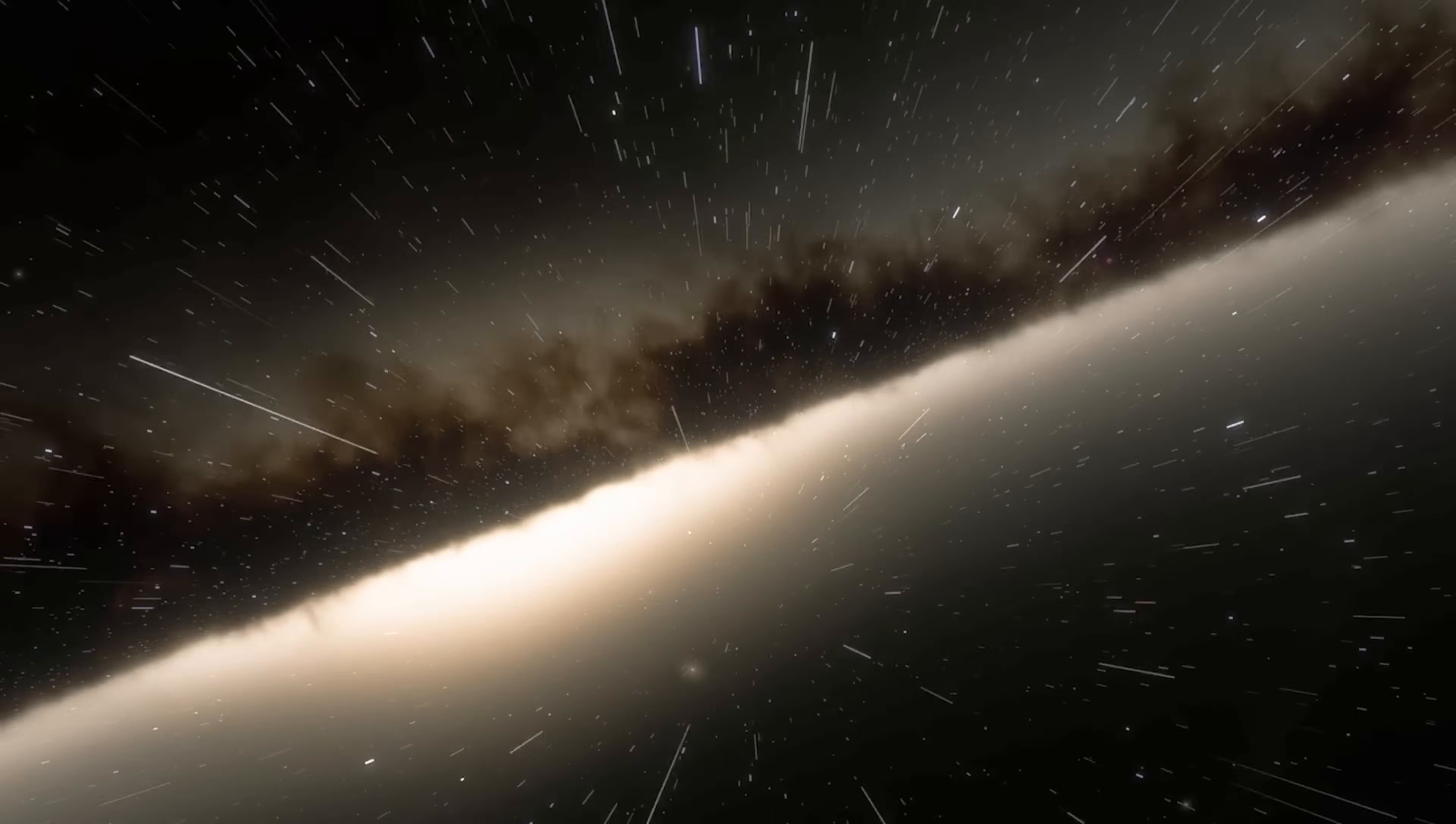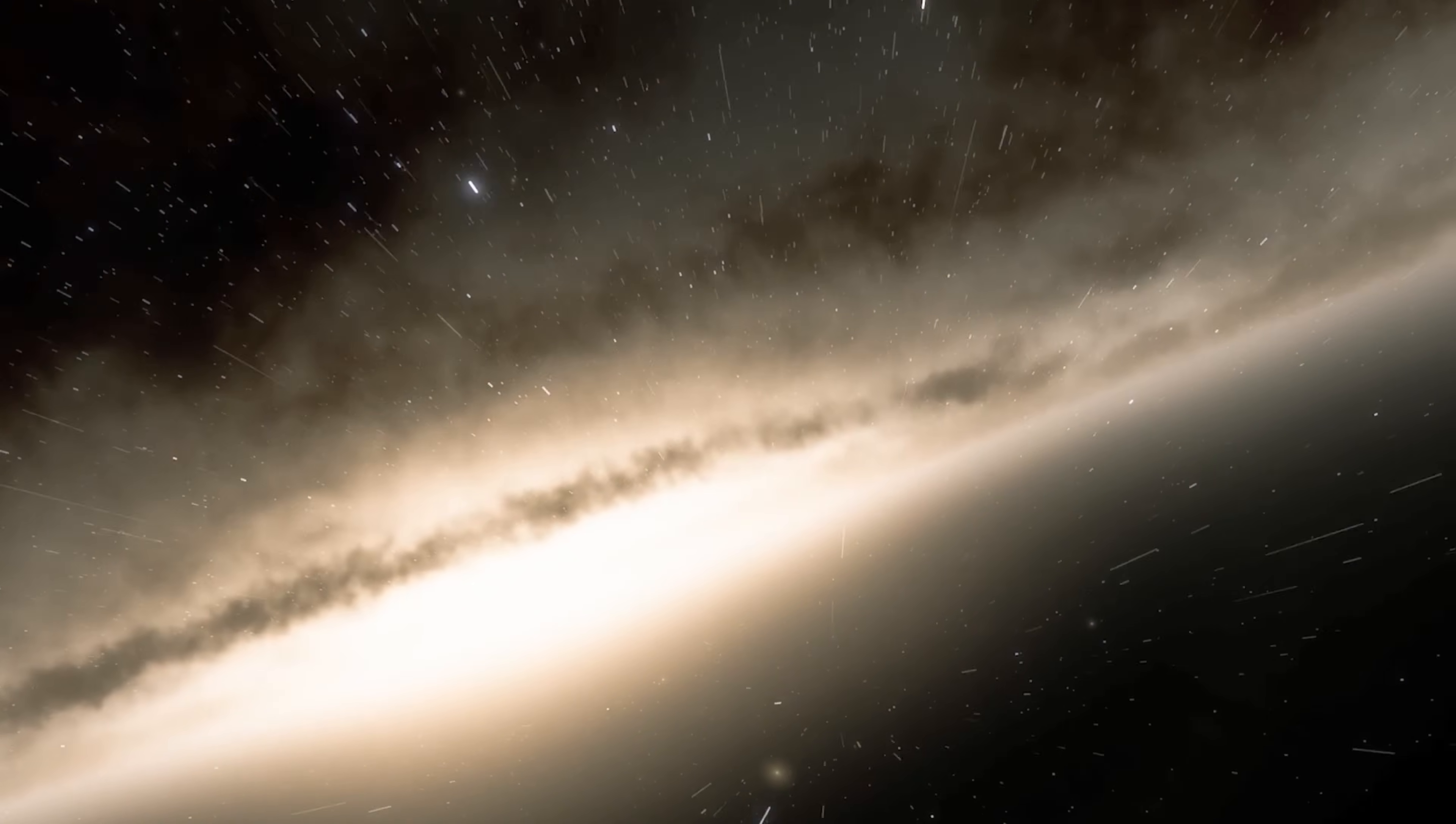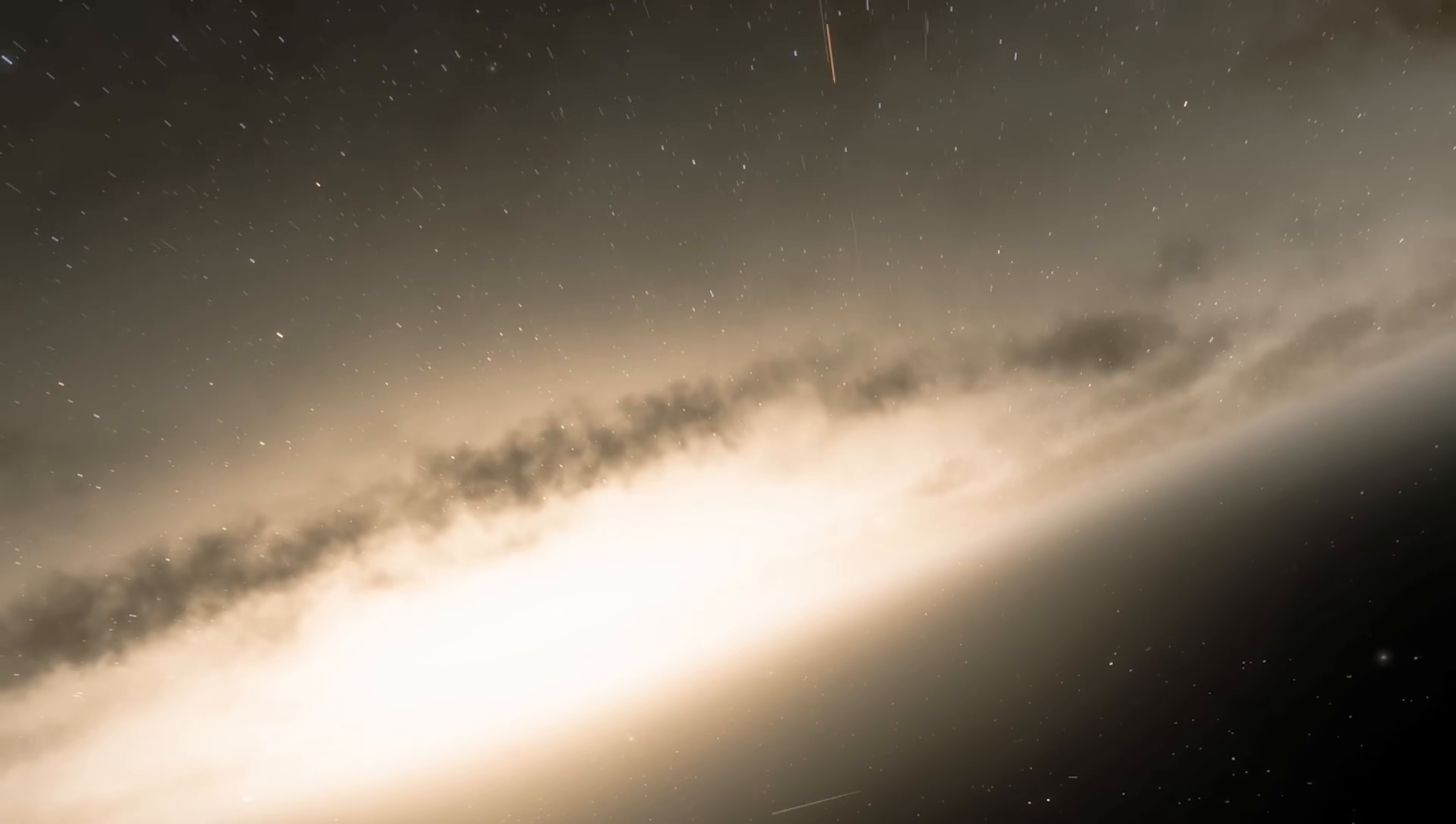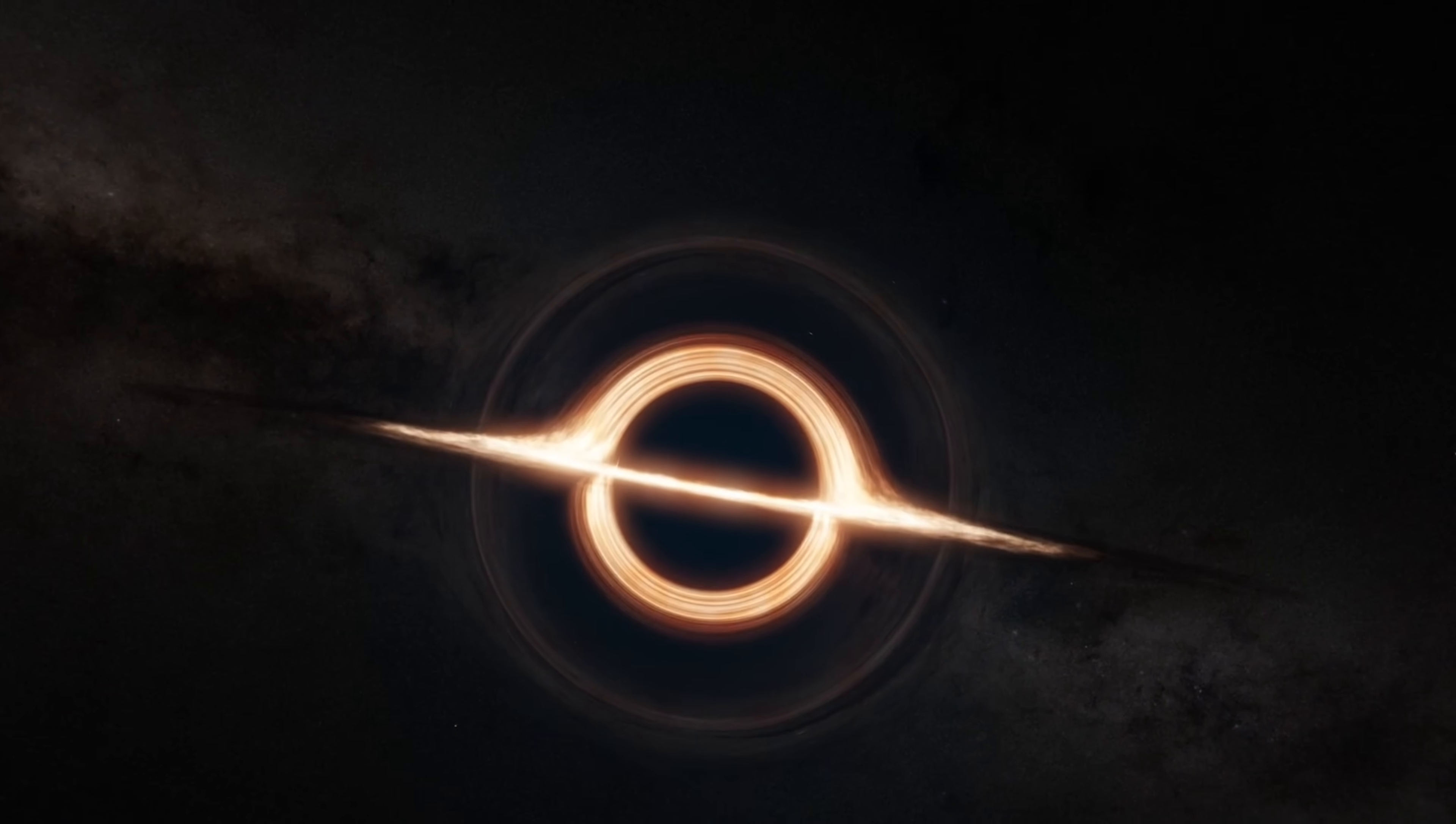The Great Attractor is located in the direction of the constellations the Southern Triangle and the Carpenter's Square, at a distance estimated to be between 100 and 250 million light years from the Milky Way galaxy. Due to the obscuration of the Milky Way's galactic plane, the Great Attractor is difficult to observe directly in visible light.